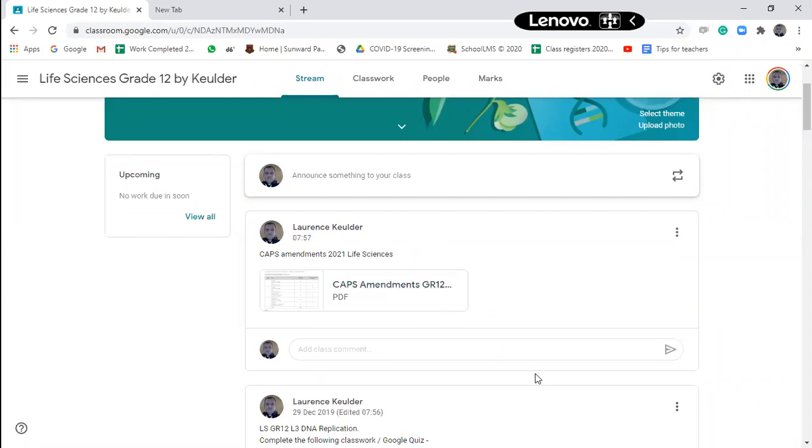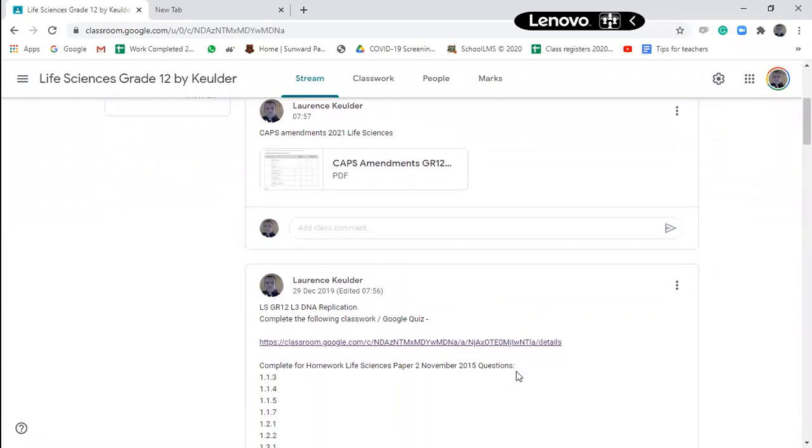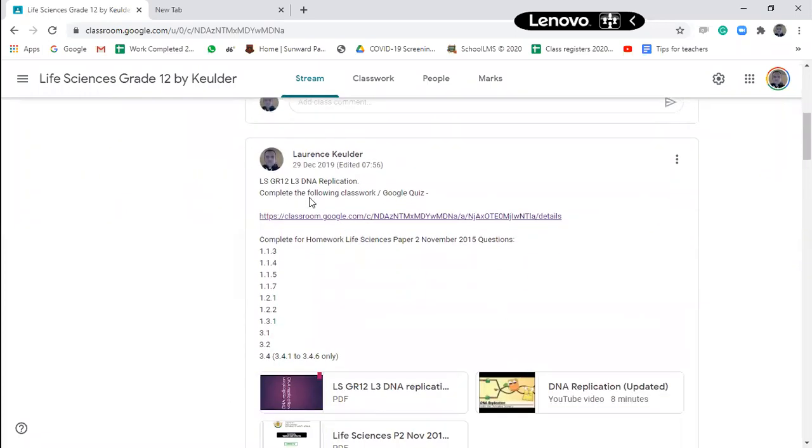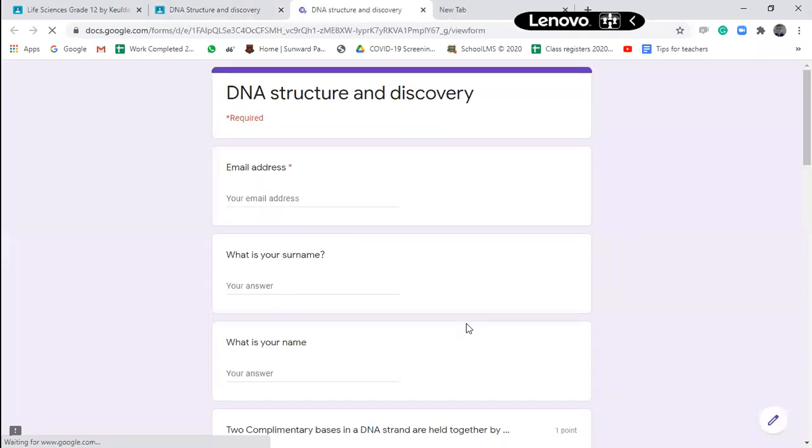This is a document telling you the differences from the previous years and this year now. So I told you the topics moved around. Then below that, I've got lesson three under lesson three. I've got there's the link to the classwork you need to do. So you're going to click on that and then there's a Google sheet that you need, a Google form that you need to fill in.